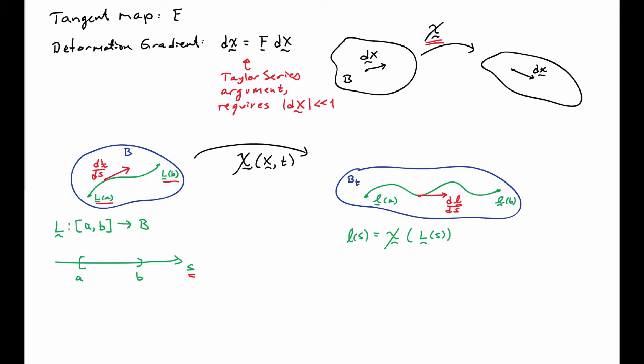The derivative of capital L with respect to S gives me the tangent vector in the reference configuration. The derivative of little L with respect to S gives me the tangent vector in the current configuration.